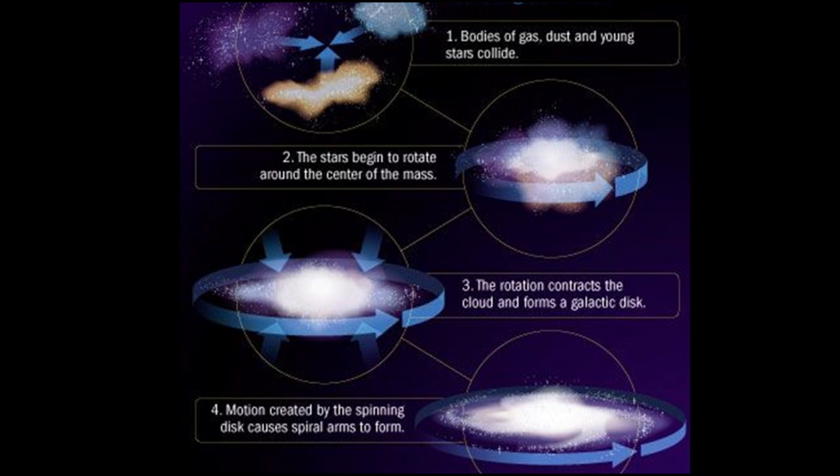The problem is that, gravitationally, galaxies take at least one billion years to form in five stages. First, bodies of gas, dust and early stars collide. Second, the stars begin to rotate around their common centre of mass. Third, the rotation collapses the cloud to form a galactic disk. Fourth, the motion created by the spinning disk causes the spiral arms to form. And then fifth, the stars form within the spiral arms. These finally mature galaxies had nowhere near enough time to fully develop gravitationally after the origin of the cosmos. Yet there they are, a huge problem.